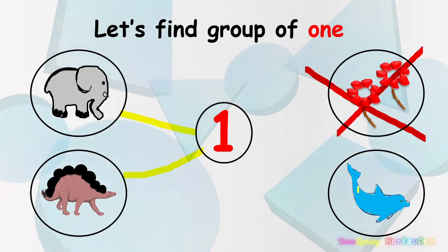What about the last picture? What is this? Yes, it's a dolphin. How many dolphins do we have here? Let's count. 1. 1 dolphin. Is it group of 1? Yes. So let's match to number 1. Well done, everybody.